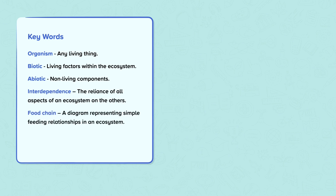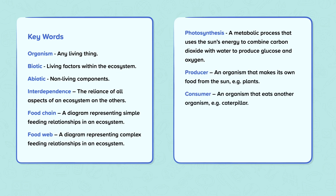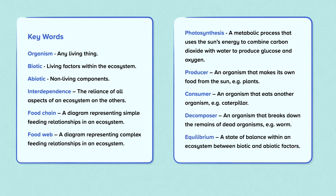Keywords. Food chain: a diagram representing simple feeding relationships in an ecosystem. Food web: a diagram representing complex feeding relationships in an ecosystem. Photosynthesis: a metabolic process that uses the sun's energy to combine carbon dioxide with water to produce glucose and oxygen. Producer: an organism that makes its own food from the sun, for example plants. Consumer: an organism that eats another organism, for example a caterpillar. Decomposer: an organism that breaks down the remains of dead organisms, for example a worm. Equilibrium: a state of balance within an ecosystem between biotic and abiotic factors.